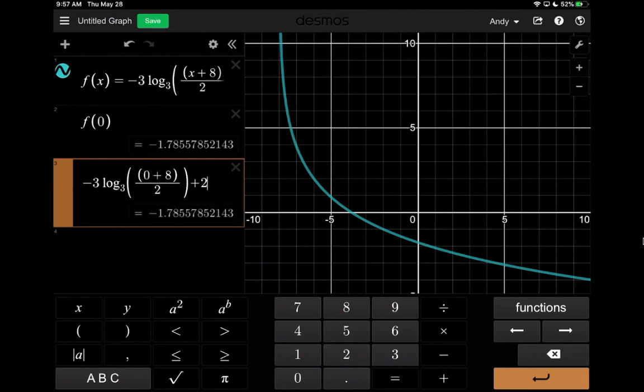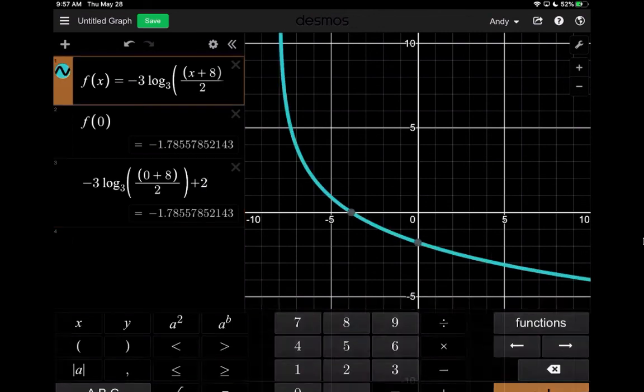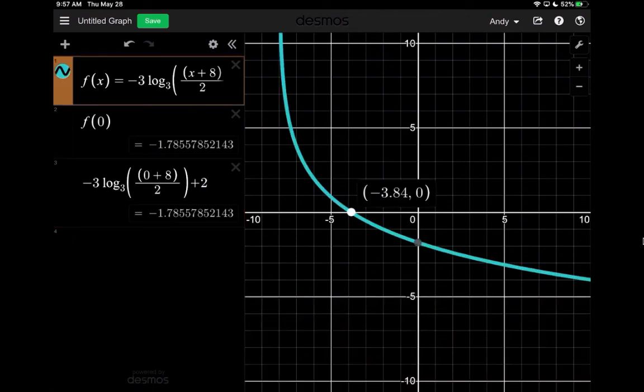So in terms of finding the x-intercept, at this point, the only way we have of getting it is graphically. So using Desmos is totally fine. And then later, we can look at how we can do this algebraically, without having to resort to a graph.